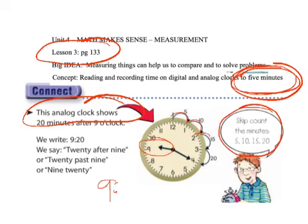So, 5, 10, 15, 20. So that makes this 9:20. We could say 20 after 9, 20 past 9, or 9:20. Either one is fine.